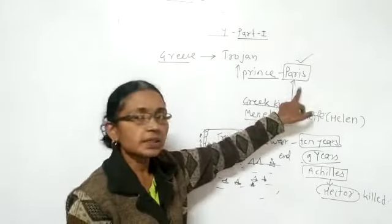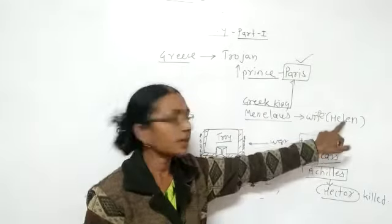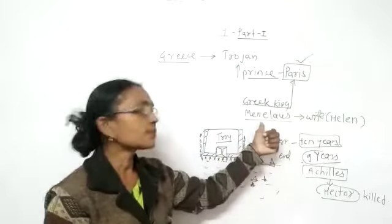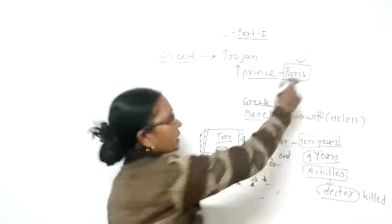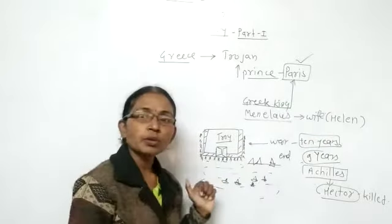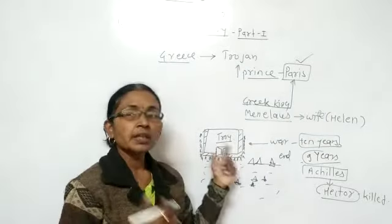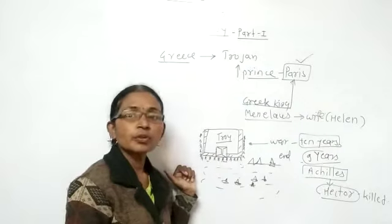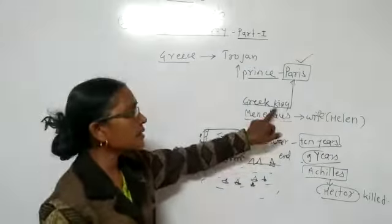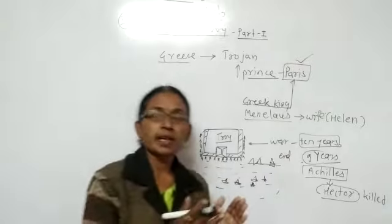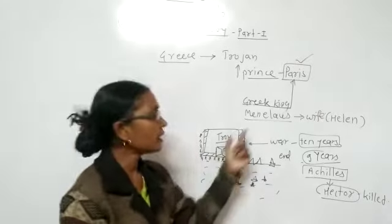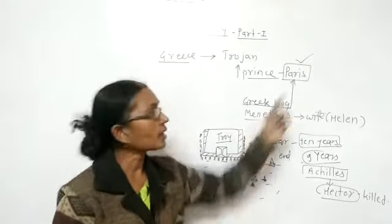Once Paris persuaded Helen, who was King Menelaus' wife, and brought her to Troy, that was the single reason for the fall of Troy. All the kings in Greece gathered together and declared war against Paris.